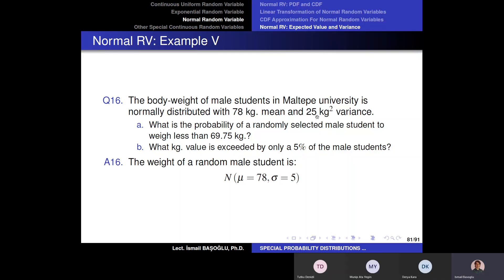And there is a variance of 25 kilograms square. So instead, the parameters are given, the question gives us the variance and the mean values of this distribution. Now, from this sentence, we need to understand that if we randomly select a student from these male students, that weight is going to be normally distributed with location parameter 78 and scale parameter equal to 5. Why? Because the variance is equal to 25 means the scale parameter is equal to 5.